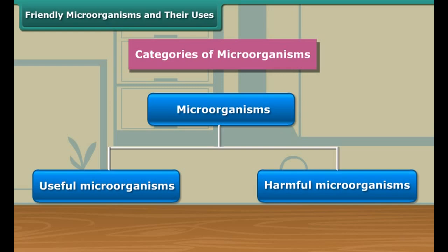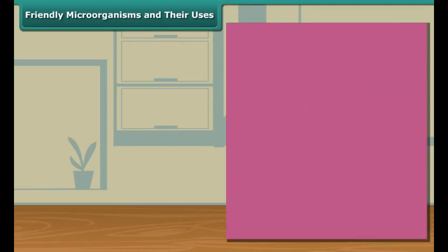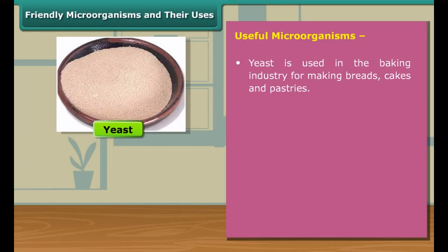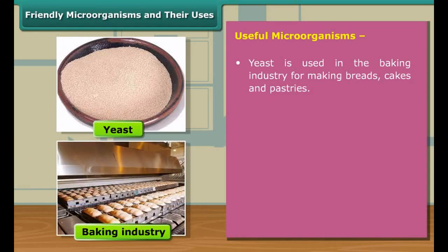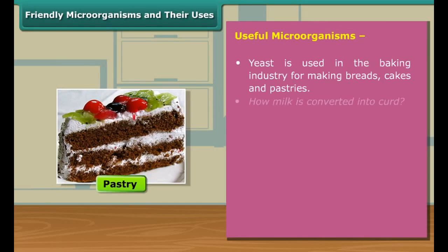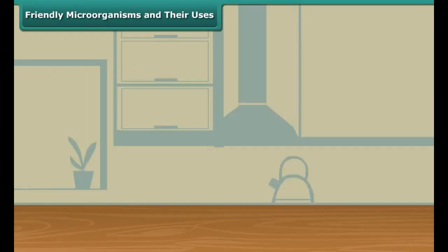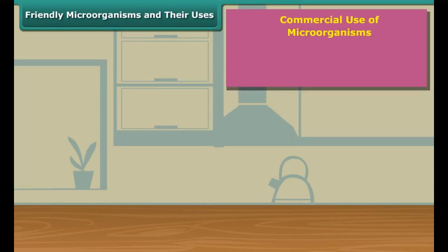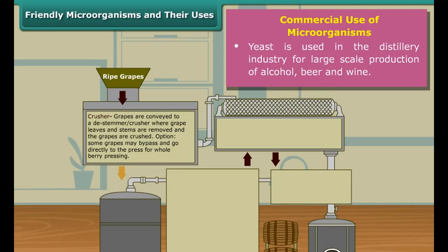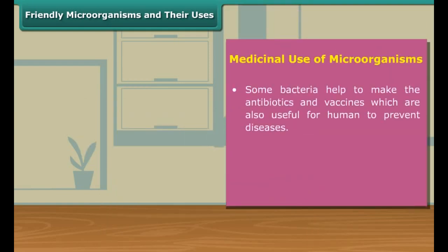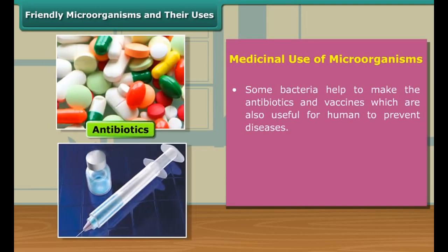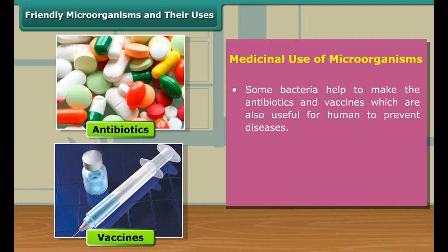Now we discuss the friendly activity of microorganisms in detail. One such friendly microorganism is yeast. Yeast is used in the baking industry and our homes for making breads, cakes, and pastries. The bacterium Lactobacillus is useful to make curd from milk. Microorganisms are also useful in commercial and medicinal fields — for instance, yeast is used in the distillery industry for large-scale production of alcohol, beer, and wine.